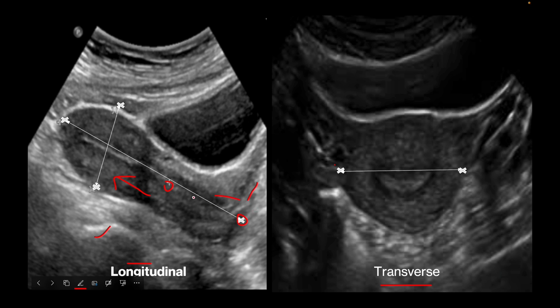It may be difficult to separate the uterine body from the cervix on ultrasound. However, if you compare the myometrial echotexture, the myometrium around the cervix is usually denser and more homogeneous, while the myometrium around the uterine body is usually heterogeneous. The endometrial strip in the uterine body appears as a bright hyperechoic line running through the center of the uterus.